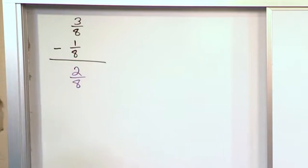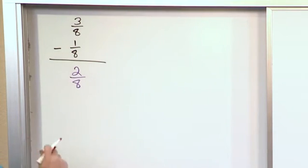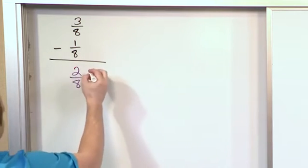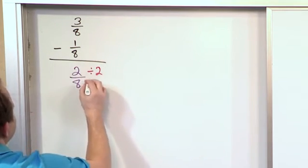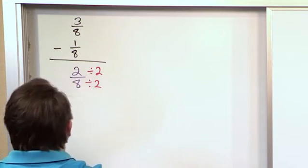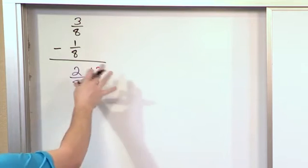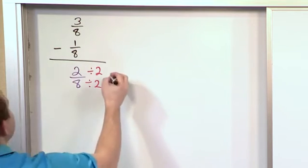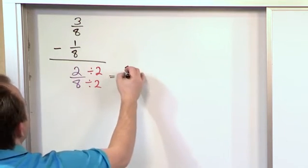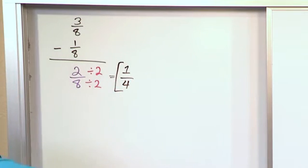Alright so then we look and see is this the final answer. Well we could write it down, it is the correct answer, but we notice that we can simplify this because I can divide the top by 2 and I can also divide the bottom by 2. Remember you can divide a fraction by anything you want as long as you do it to the top and to the bottom. So 2 divided by 2 is 1 and 8 divided by 2 is 4. So the answer to this is 1/4.